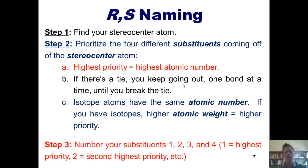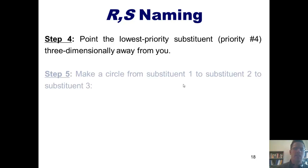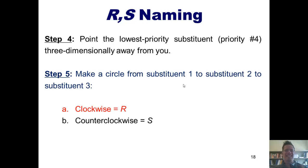Once you've done step 2, move to step 3 by numbering your substituents 1, 2, 3, and 4 from highest to lowest priority. In step 4, you have to three-dimensionally point the lowest priority substituent — priority group number 4 — away from you. It's often very helpful for new students to build a three-dimensional model. Step 5: make a circle going from substituent 1 to 2 to 3. If that circle is clockwise, it is an R stereocenter. If counterclockwise, it is an S stereocenter.